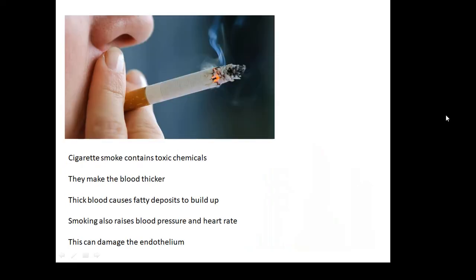Cigarettes again. Cigarette smoke contains lots and lots of toxic, nasty chemicals. I've already talked about the damage that it does to your lungs and your breathing passages. But these chemicals, they make your blood thicker. And this thick blood causes fatty deposits to build up. And smoking also raises blood pressure and heart rate, and this can damage the endothelium.